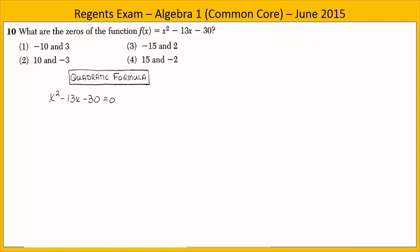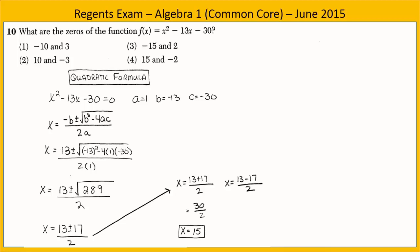Another way to do this is by using the quadratic formula. Set the equation equal to zero, identify the a, b, and c values, and substitute into the formula. When we solve, we find that x equals 15 and x equals negative 2. Those are the zeros. Again, choice 4 is our answer.